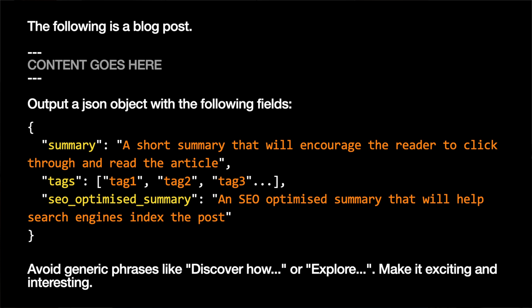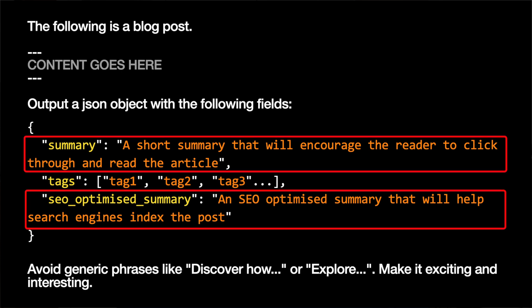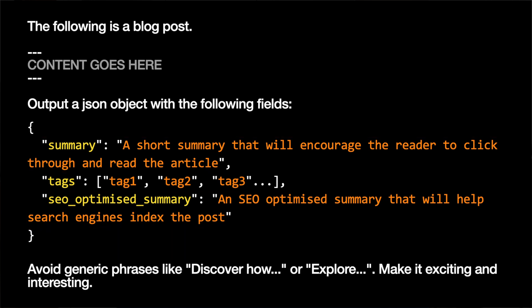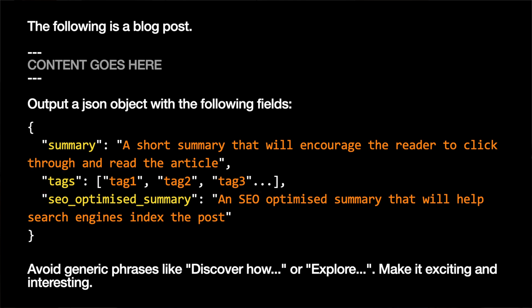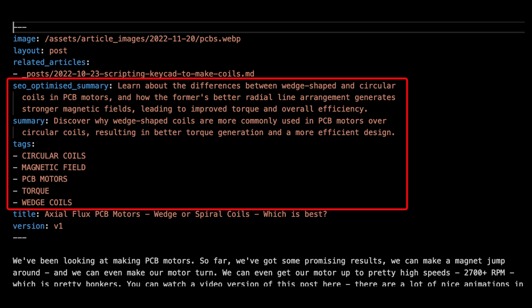I've made a really simple prompt for ChatGPT. We give it our post content and then ask it to output some JSON with the fields that we want. We've got a couple of summaries — I thought it might be interesting to have a simple summary and one that is optimised for search engines — and we've got the list of tags. I run this against all the posts and write the results out to the front matter of each post. It worked really well. The SEO summary was actually a bit nicer than the normal summary, so I've ended up using that.